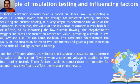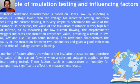Insulation resistance is based on Ohm's law: by injecting a known DC voltage into the dielectric material and measuring the current flow, we find resistance using R = V/I. Since insulation resistance is very high, the current will be very low. A megger is used to indicate insulation resistance in the order of kilohms, megaohms, gigaohms, or teraohms. Factors such as temperature or humidity may significantly affect the measurement result.